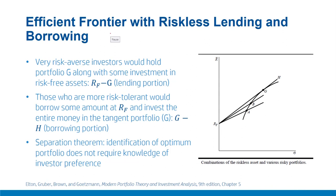The question is: which portfolio is better? For example, if you look at points on line RF to B, it offers higher returns corresponding to RF to A for any given level of risk. Similarly, points on RF to G offer higher returns than those on RF to B. So as we rotate this line counter-clockwise, we make it steeper and steeper, suggesting that the concept of tangency would indicate the highest rotation is up to the tangency point G.